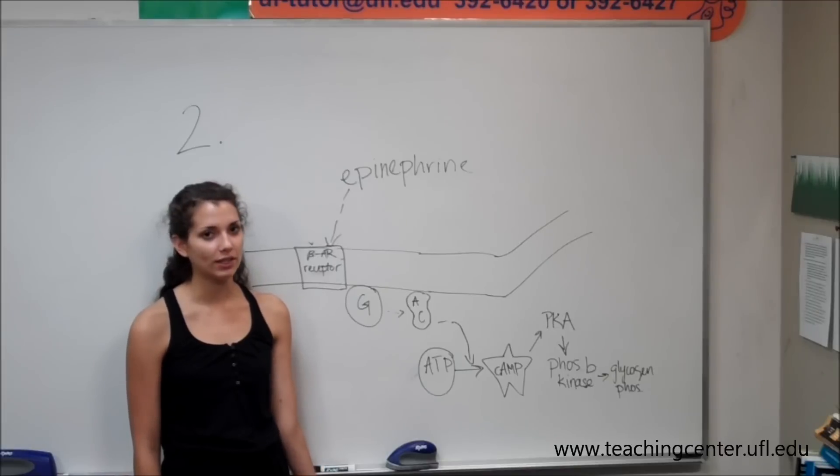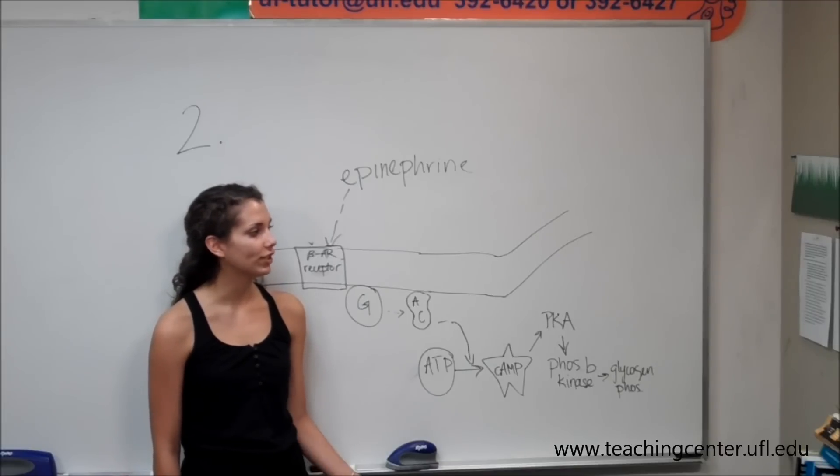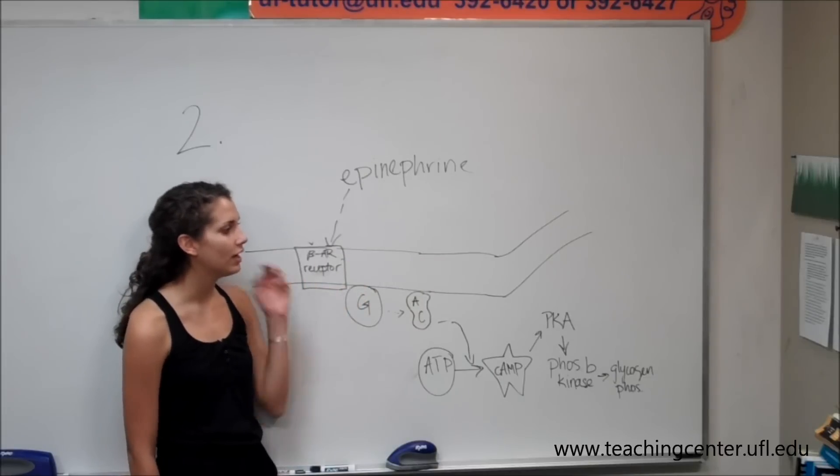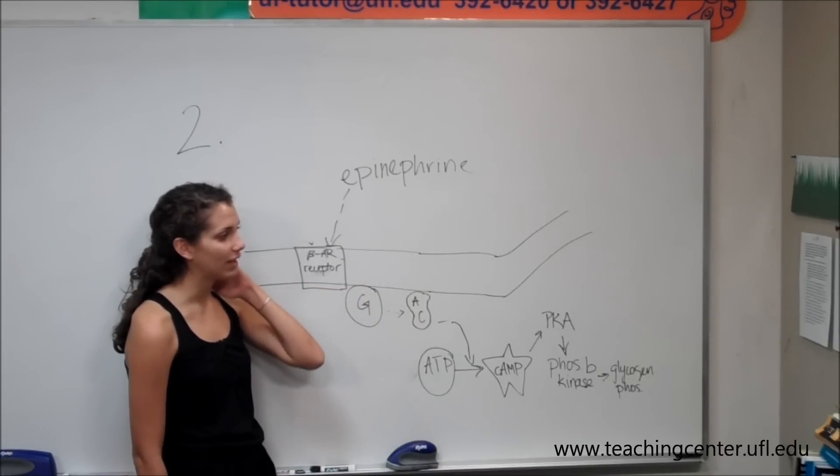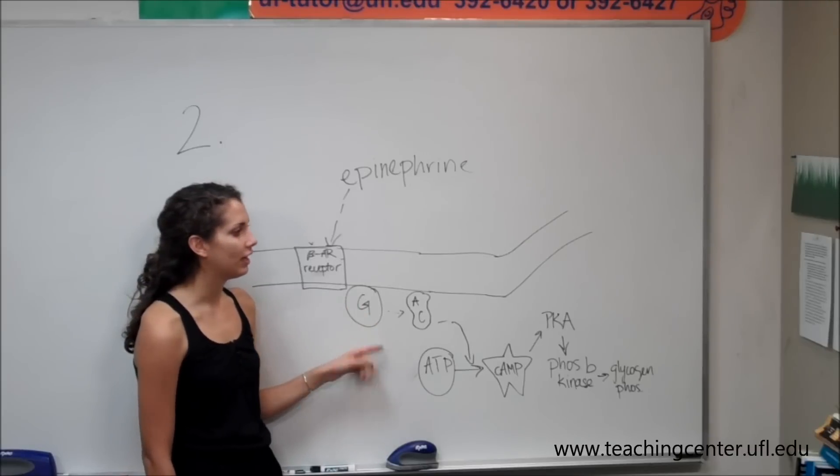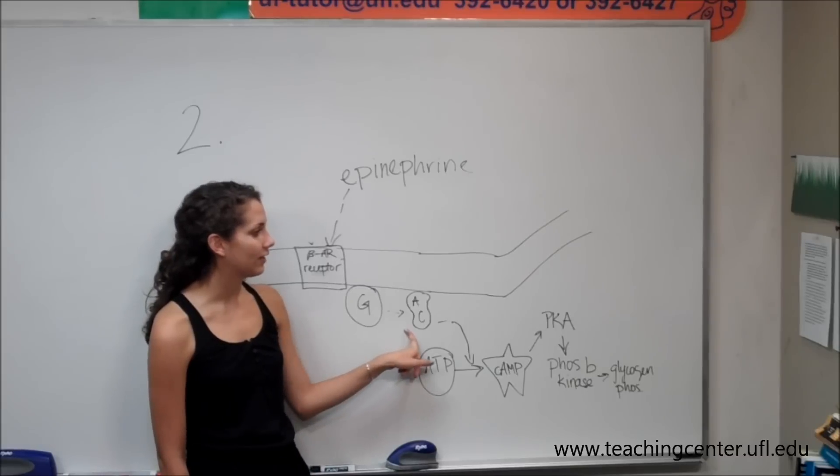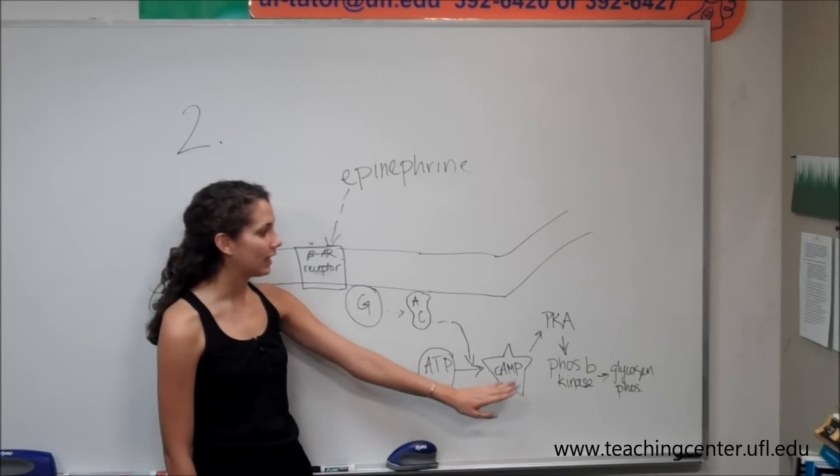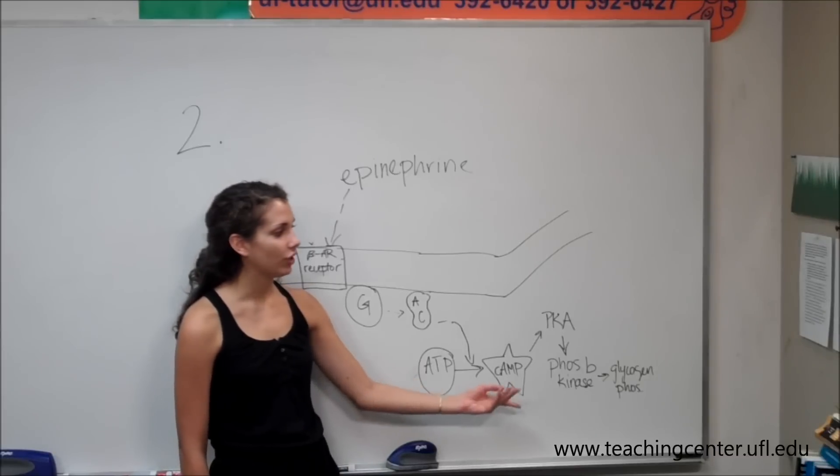So we saw at number one how signaling pathways work. Just to quickly review, in the case of epinephrine, epinephrine binds to the beta-adrenergic receptor. The beta-adrenergic receptor activates the G protein by causing it to bind GTP. The G protein goes on to activate adenylyl cyclase, which converts ATP into cyclic AMP.